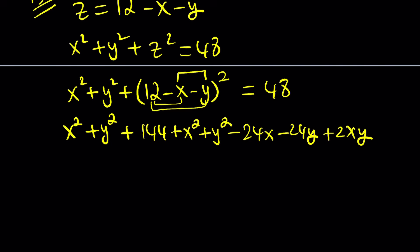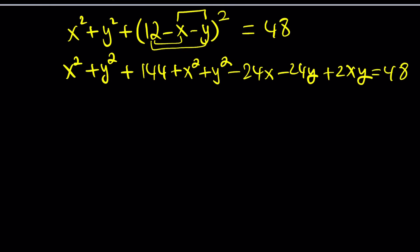Again, we don't know if this is going to be helpful. We're just giving it a try. Now, we can go ahead and combine some like terms here. For example, x squared plus y squared appears twice. So that means I can write it as 2x squared plus 2y squared. And then we have a plus 2xy. Minus 24x, minus 24y. And then this is 144.